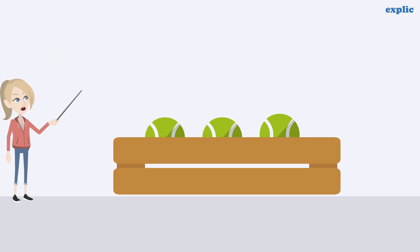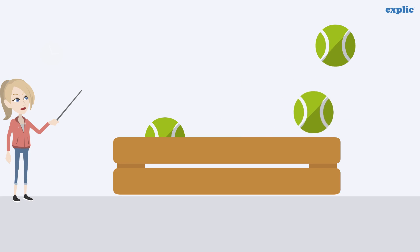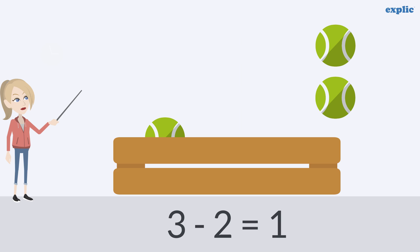Subtraction of whole numbers sometimes results in a whole number. For example, if you take away 2 from 3, you will get 1, which is a whole number.